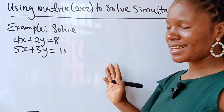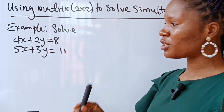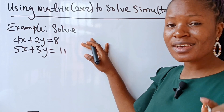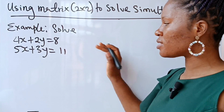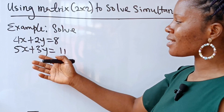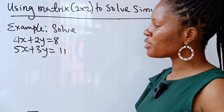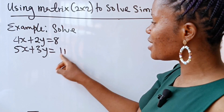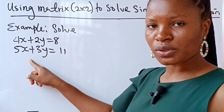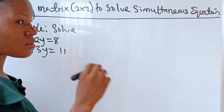Welcome to today's class. Today we are going to use a 2x2 matrix to solve simultaneous equations. Don't worry, it's very easy. Now, when you are given something like this and asked to use a 2x2 matrix to solve it, the first thing you need to do is put this in a 2x2 matrix. Let's look at the solution.